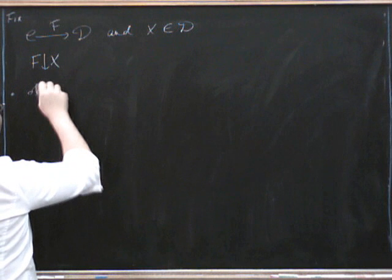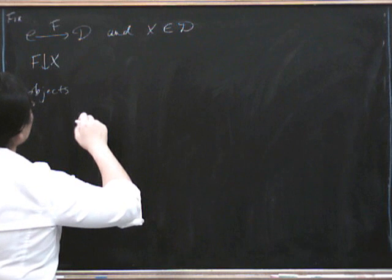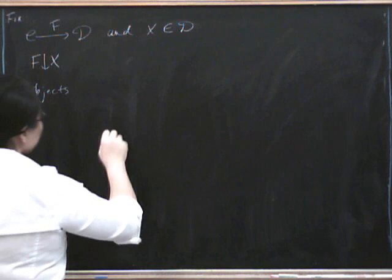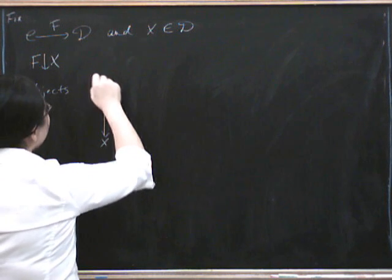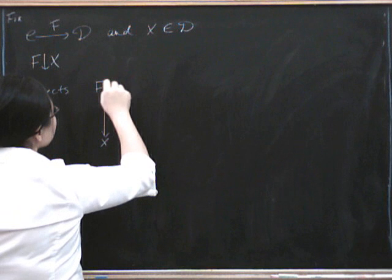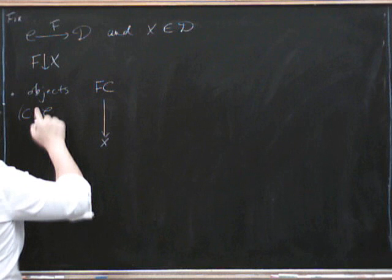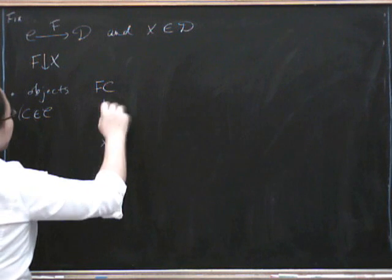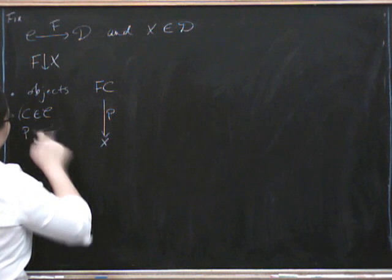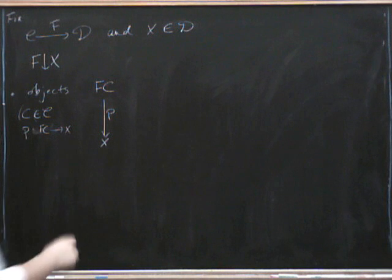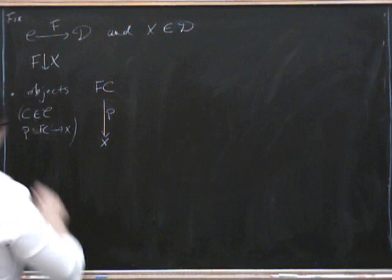Because the objects this time are going to be a bit like before but a little bit more complicated. So X is still going to sit here at the bottom and we're still going to have a morphism down to it. But it's not going to be any old morphism this time. It's got to be F of something, F of C. So it's a pair which is C in the category C and a morphism P from F of C to X. So your data, part of your data is something in C and part of your data is something in D.